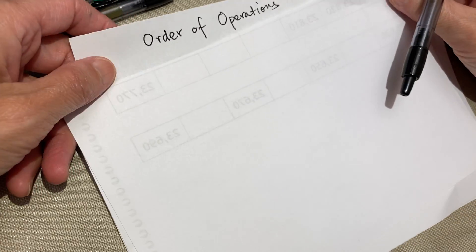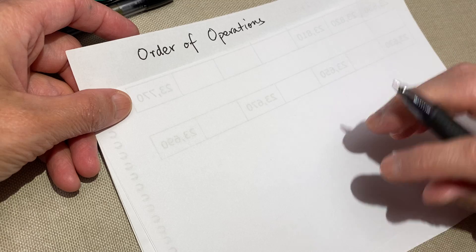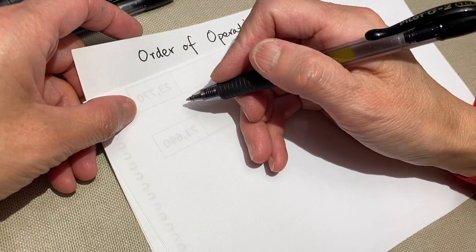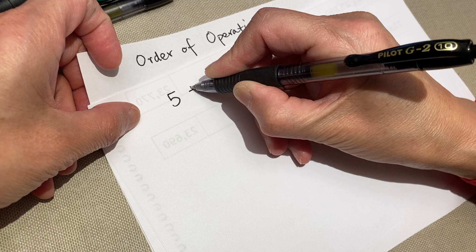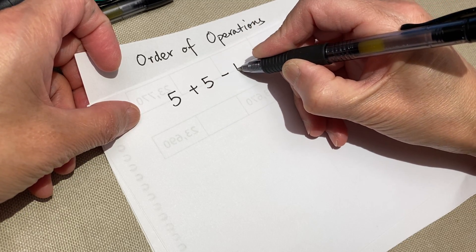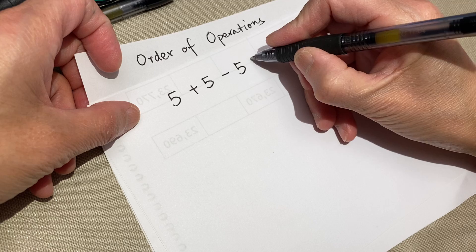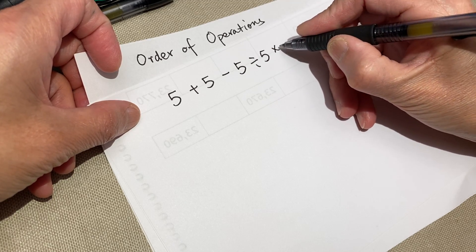Okay, hello dear friends. So we will do order of operations today. So let's write down a problem. Five plus five minus five divided by five times five.